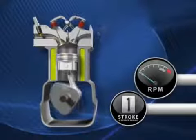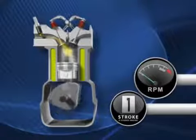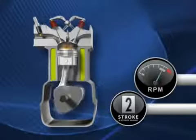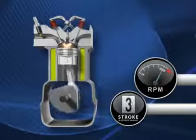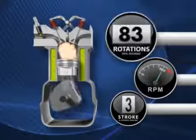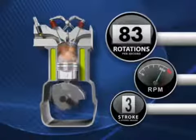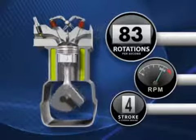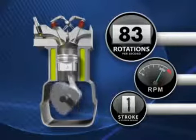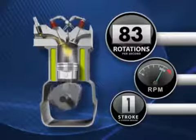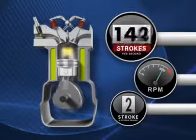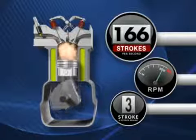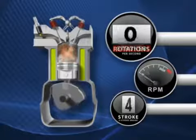At wide open throttle, the crankshaft may turn at 5,000 RPMs — a dizzying 83 times per second. Meanwhile, the piston traveled up and down 166 times in that same second.